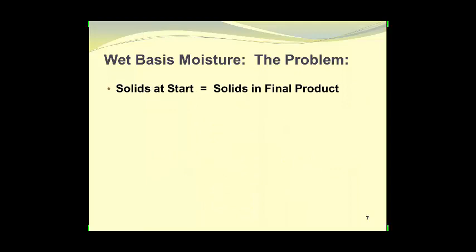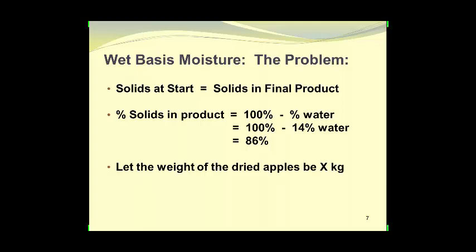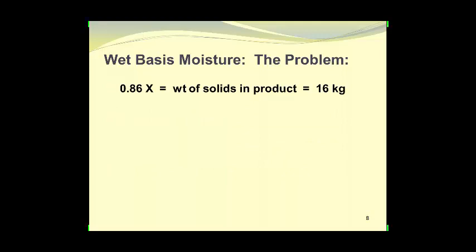We will assume that no solids are lost in the drying process, meaning the weight of solids at the start equals the weight of solids in the final product. The percent solids in the final product will be 100% minus 14% water, giving us 86% solids. We let the weight of the dried apples be X kilograms, and prepare an equation: 86% of the final weight will be solids, shown as 0.86X equals 16 kilograms.